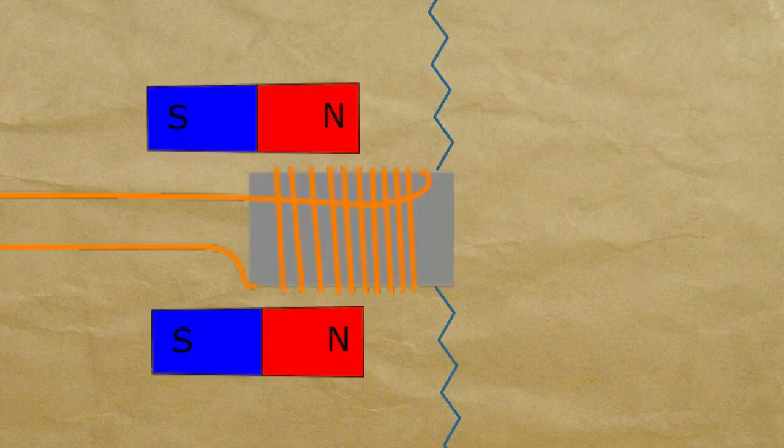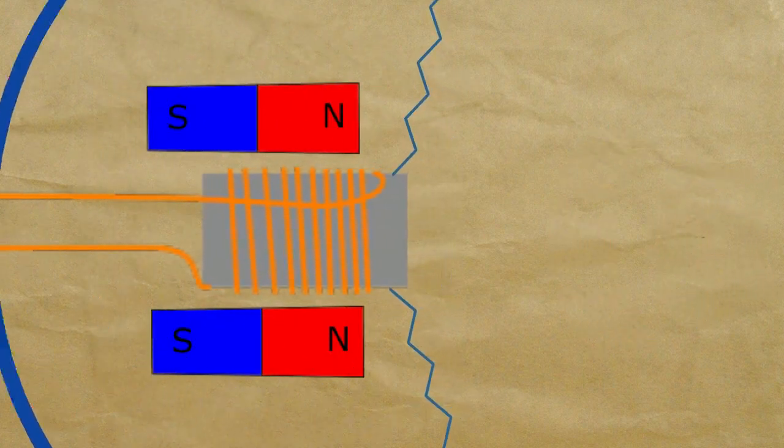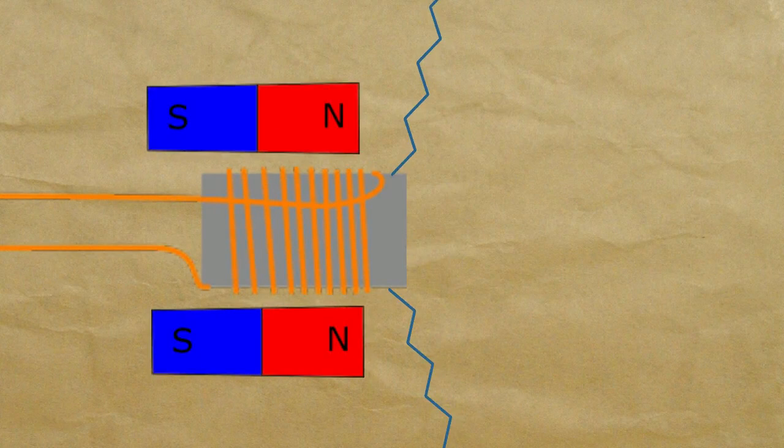To use this principle to make a transducer you simply need to suspend a copper coil inside of a magnet. If the copper coil is moved by incoming sound waves, then the coil acts as a microphone and generates an electrical representation of the sound.